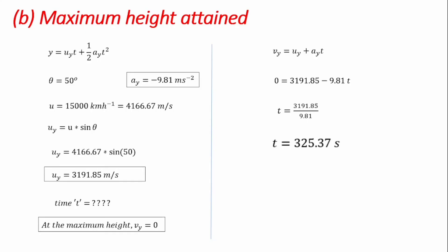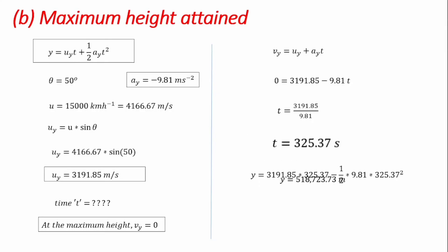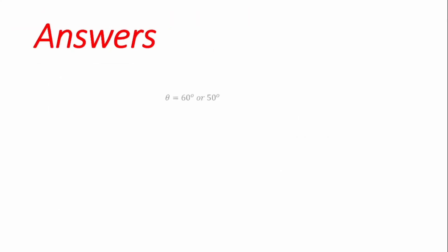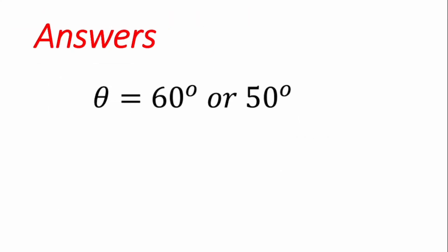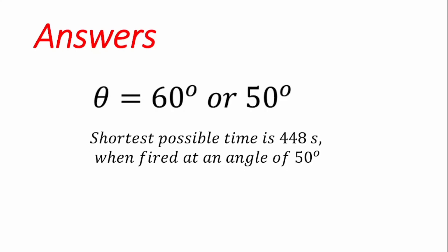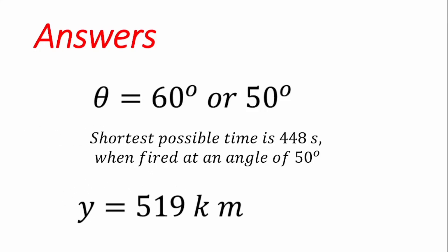Substituting t = 325.37 s into the vertical displacement equation gives a maximum height of approximately 518,723.73 meters, which is about 519 kilometers. In summary, we have determined the angle of projection (50° or 60°), the shortest possible time to hit the target (448 seconds at 50°), and the maximum height the missile attains (≈519 km).